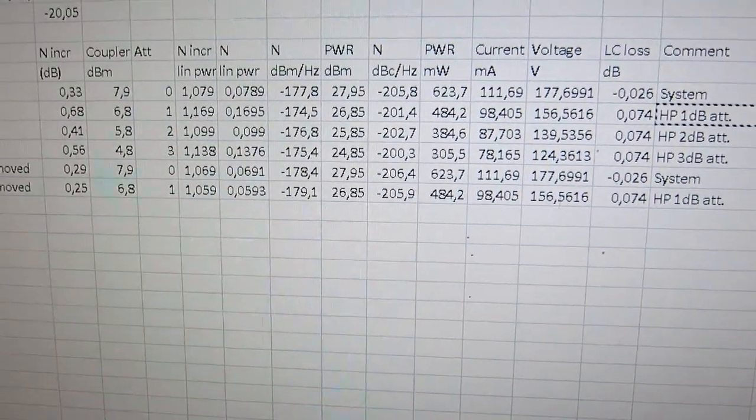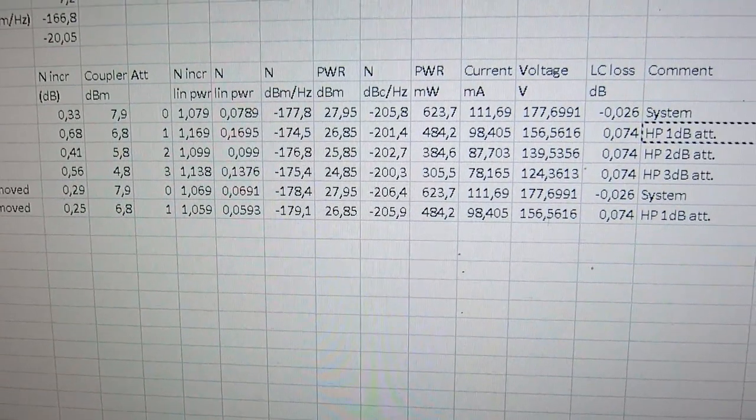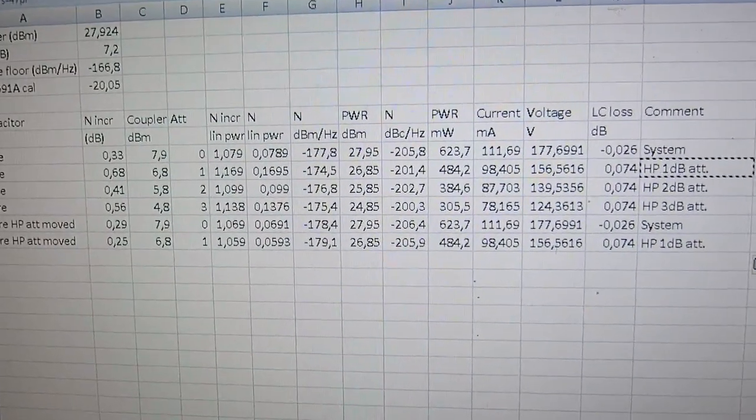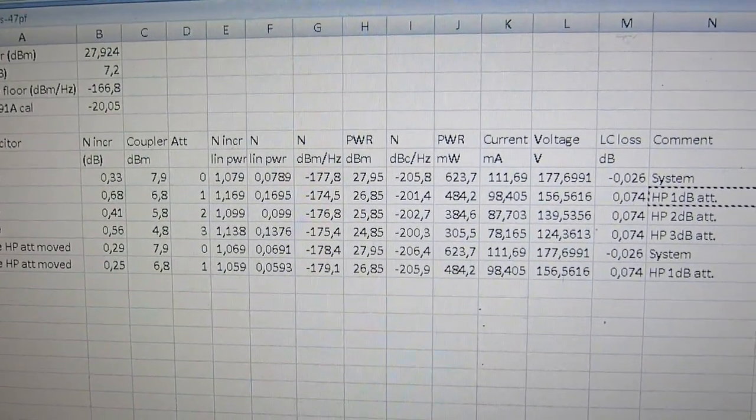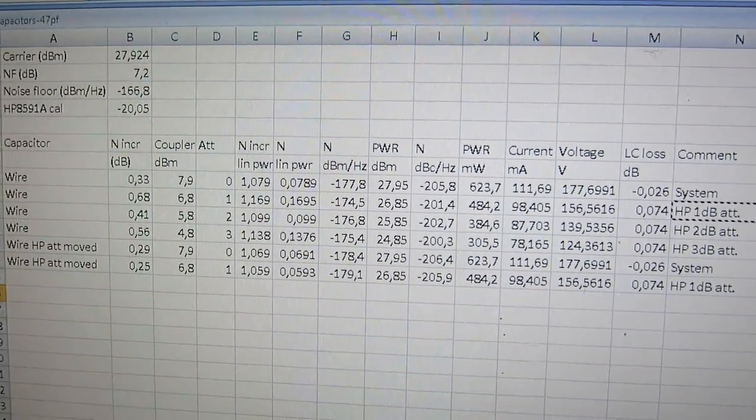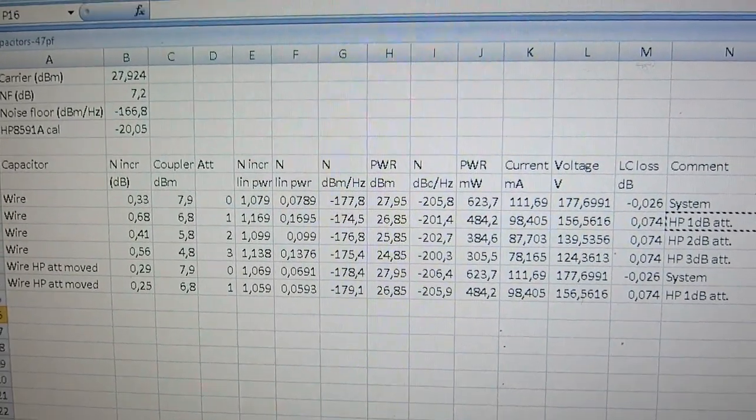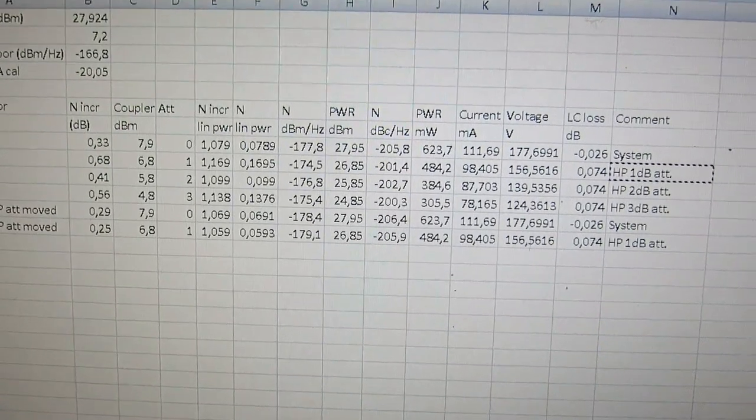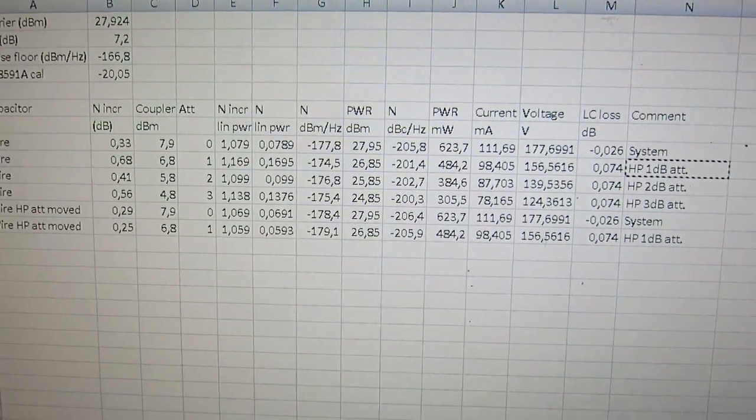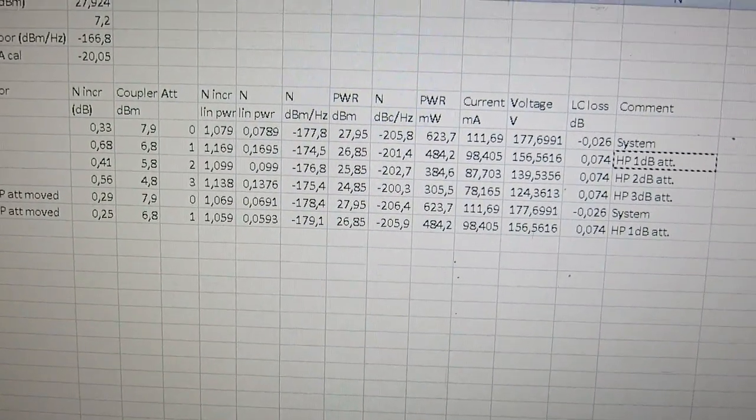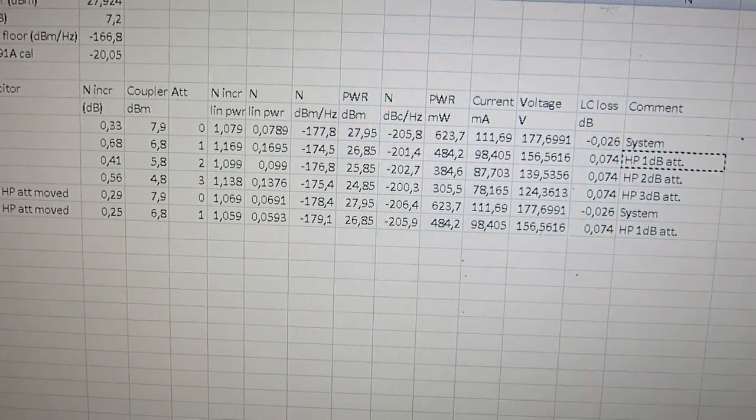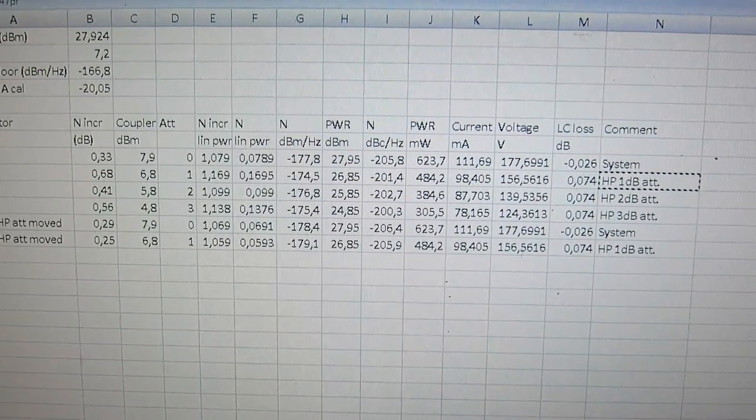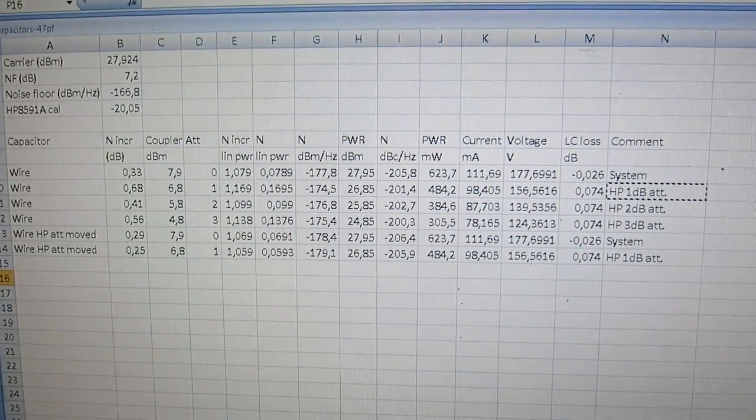So I have been seeing in the first experiment actually the noise of the stepped attenuator. But putting it in front of the notch filter at the offset frequency, I remove that. So the limit of measurements for the capacitors is about minus 205 dBc per hertz now. So I will start to look at the capacitors.